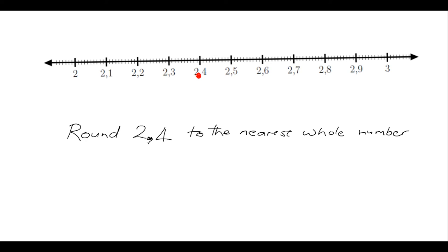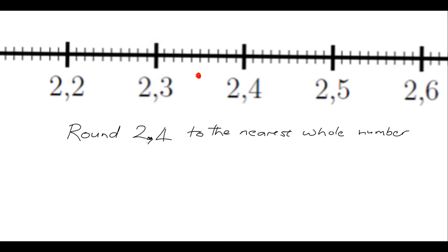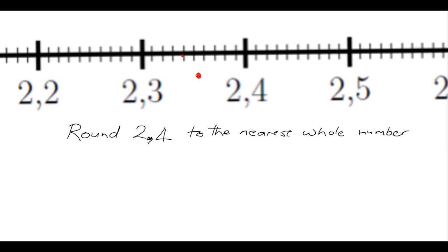It's over there, and your question when you're asked to round it to the nearest whole number is: which of these numbers, 2 or 3 — those are your whole numbers — which of those two is your 2.4 closest to? Hopefully that's quite obvious: it's closest to 2, because from 2 to 2.4 it's just 0.4 steps, but from 2.4 up to 3 that's 0.6 steps. So obviously the closest whole number is 2, so when you round it you're going to round it down to 2. That's the closest whole number.